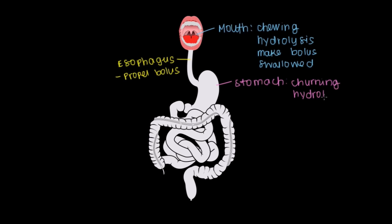In addition to that, you can store food in your stomach if it's not time to pass it on to the next component of your GI tract. And the overall goal here is to make what's called chyme — we take our bolus and sort of melt it down into a more fluid type of substance that we can pass on to our intestines.